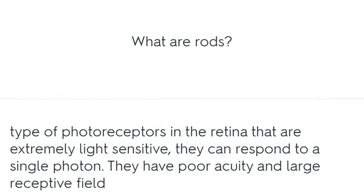What are rods? A type of photoreceptor in the retina that is extremely light sensitive — they can respond to a single photon. They have poor acuity and a large receptive field.